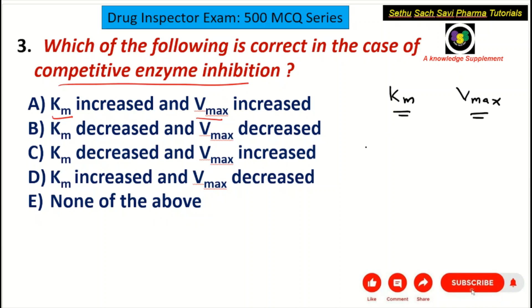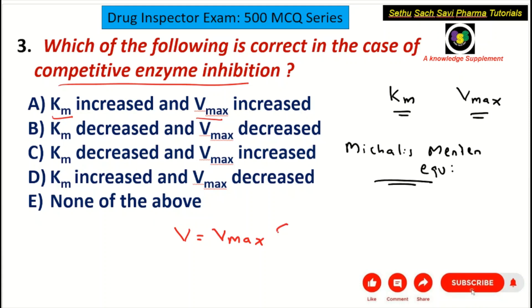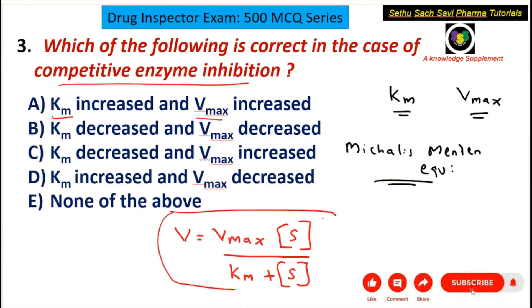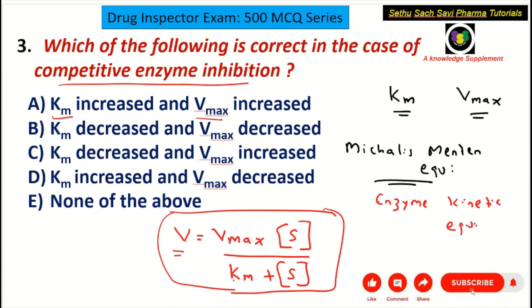These parameters come in the equation called the Michaelis-Menten equation, which comes in enzyme kinetics. The equation is: V = (Vmax × S) / (Km + S), where V is the measured velocity, Vmax is the maximum velocity, Km is the Michaelis-Menten constant, and S is the substrate concentration.